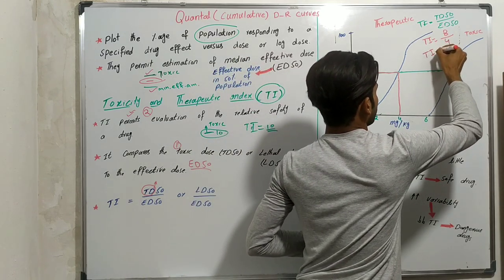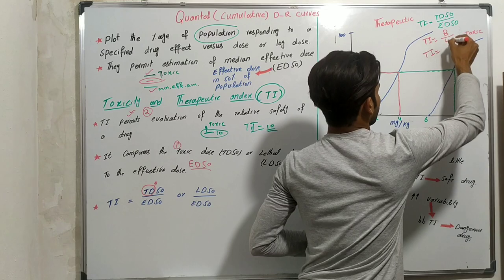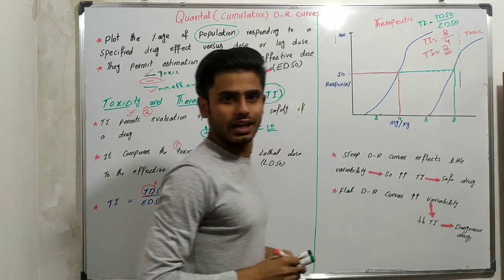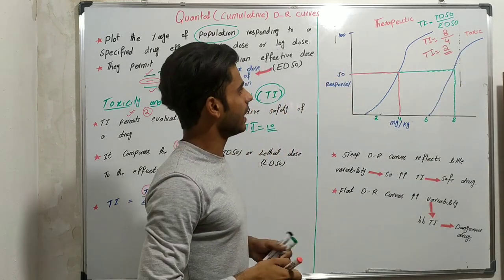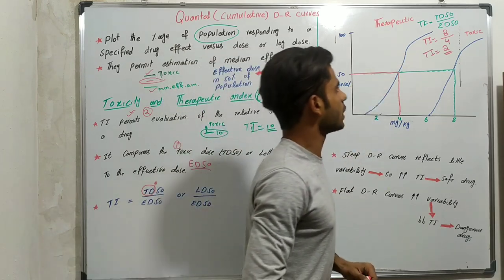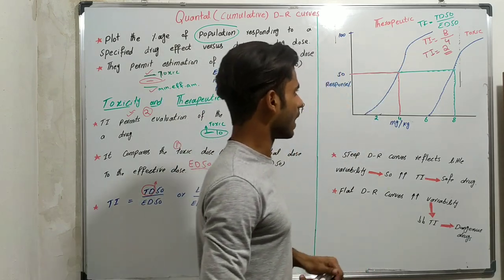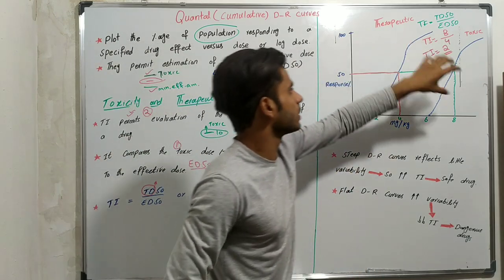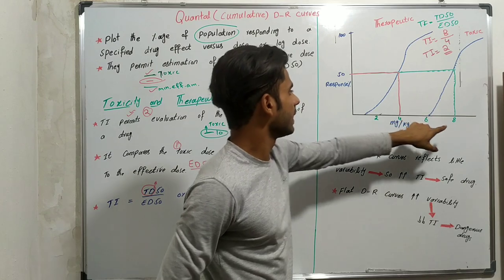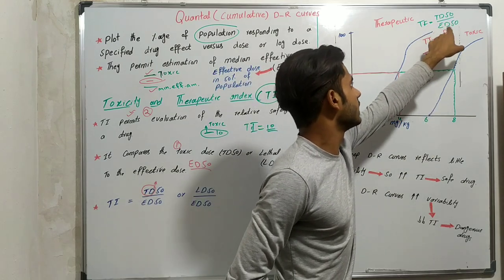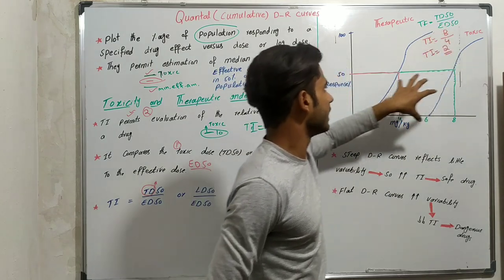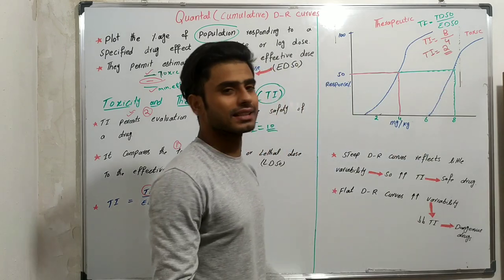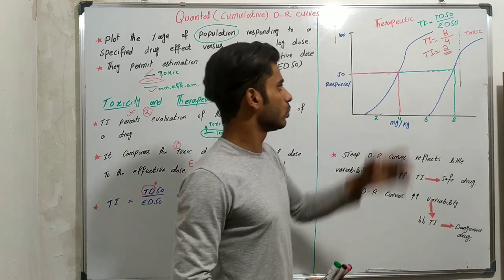Next we determine ED50 — the dose effective in 50 percent of the population from the therapeutic curve — which gives us 4 mg. So the therapeutic index equals 8 divided by 4, which equals 2. In this way we apply the formula: first determine TD50, then ED50, then divide to get the therapeutic index of 2.